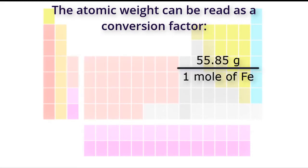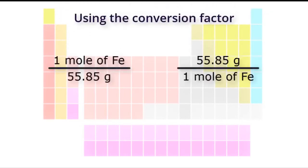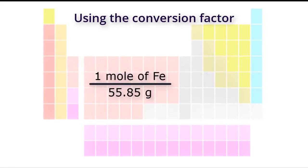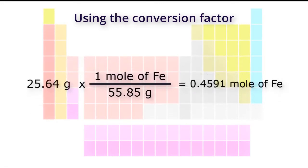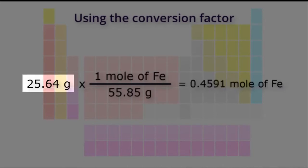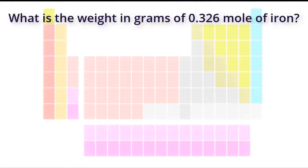The atomic weight can be read as a conversion factor of either one mole of iron per 55.85 grams, or 55.85 grams per one mole of iron. To convert grams of iron to moles of iron, we use the moles-per-gram conversion factor. Multiplying 25.64 grams by our conversion factor tells us that there are 0.4591 moles of iron in 25.64 grams of iron.